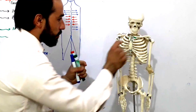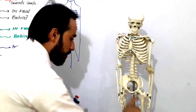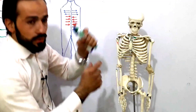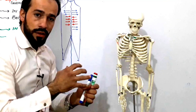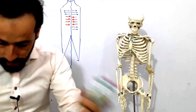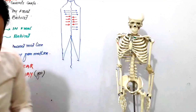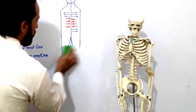So the heart is proximal to the head and the femur is distal to the head. So distal and proximal are clear. The next term we use is superficial and deep.